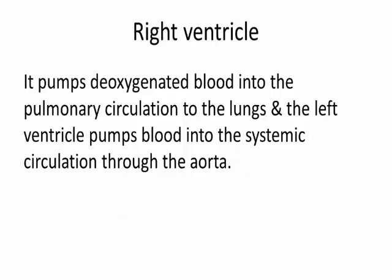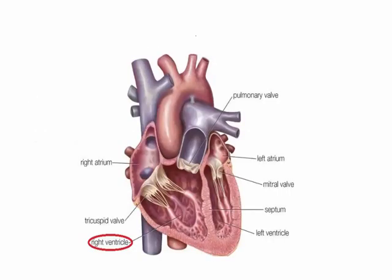Right ventricle. It pumps deoxygenated blood into the pulmonary circulation to the lungs, and the left ventricle pumps blood into the systemic circulation through the aorta.